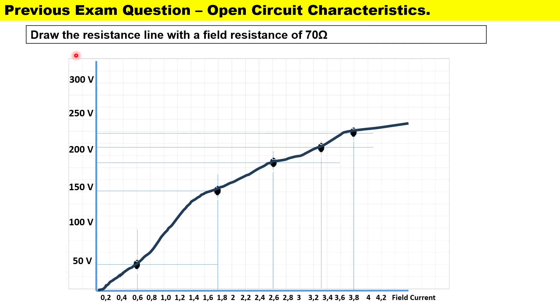Now we need to draw the resistance line with a field resistance of 70 ohms. Let me show you how we calculate this. In order to draw our field resistance line, your first plot will be zero and zero. That's going to start down here at zero.